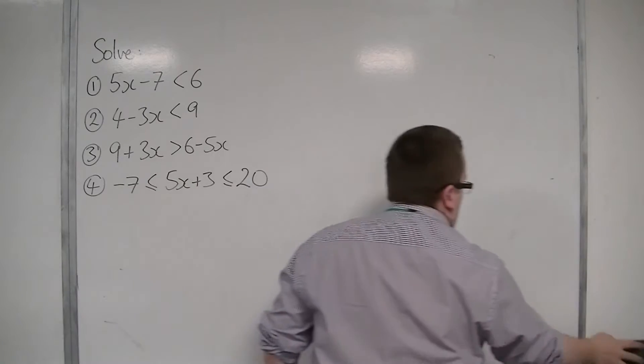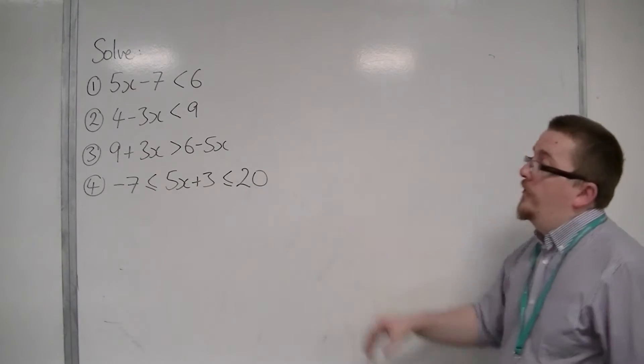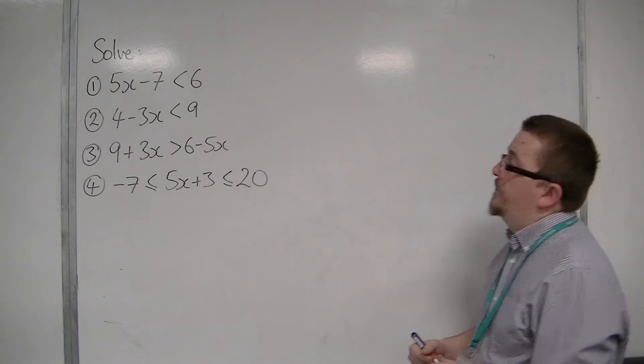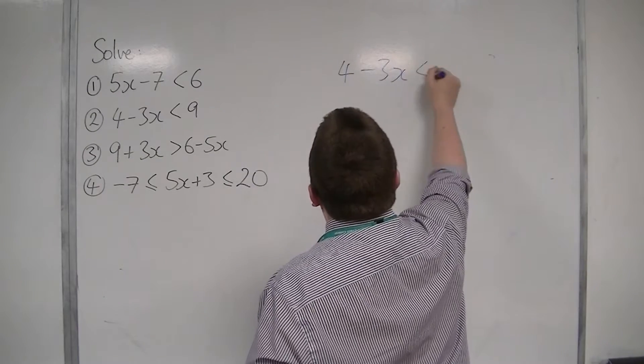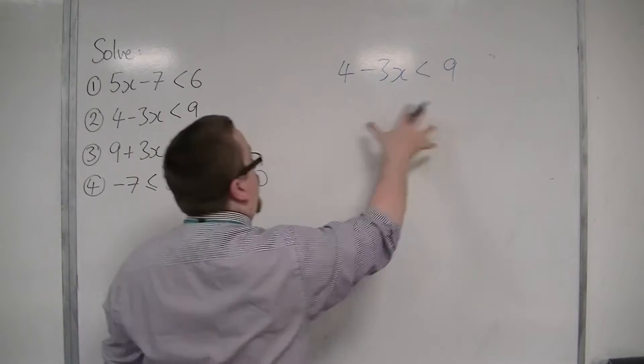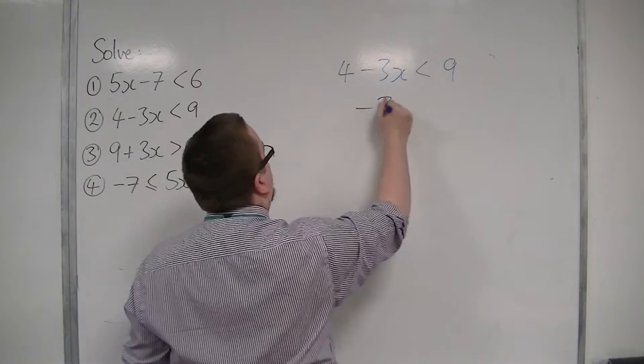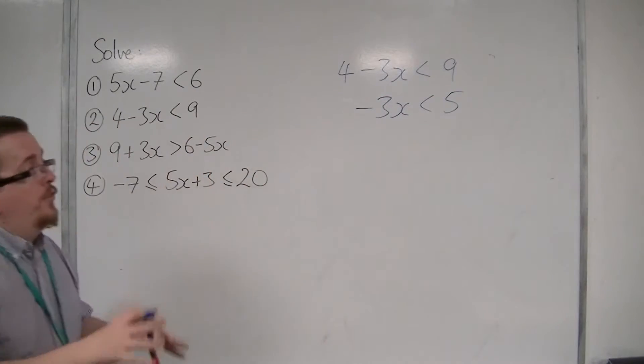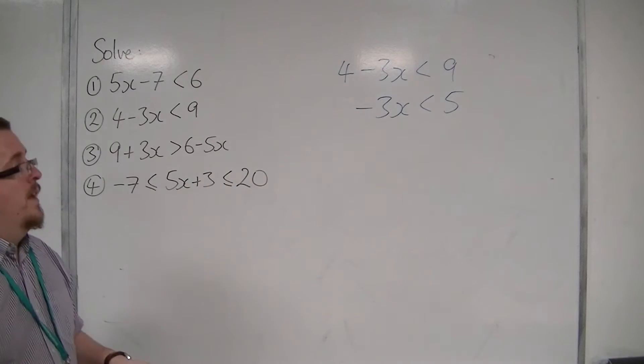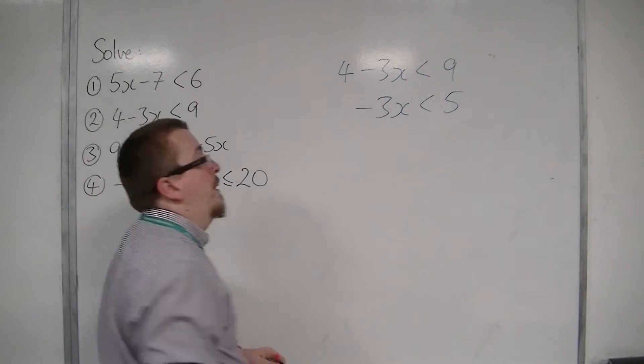Let's look at the next one. 4 minus 3x is less than 9. So with this one, what I can do is take 4 from both sides, and that leaves me with minus 3x is less than 5.